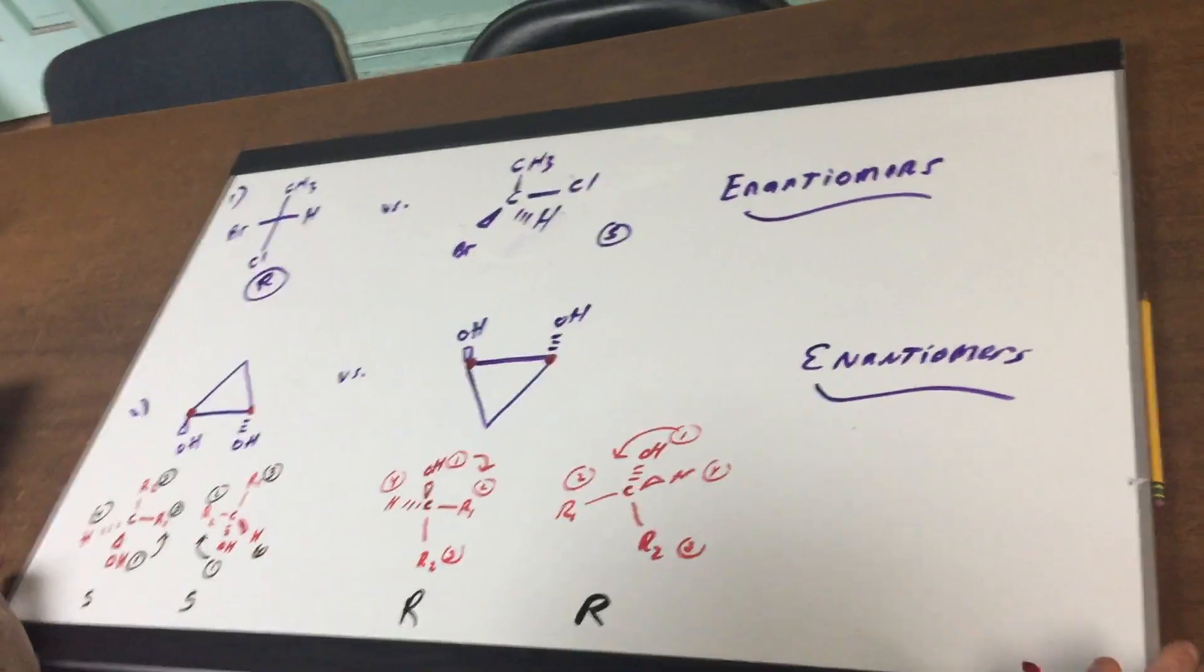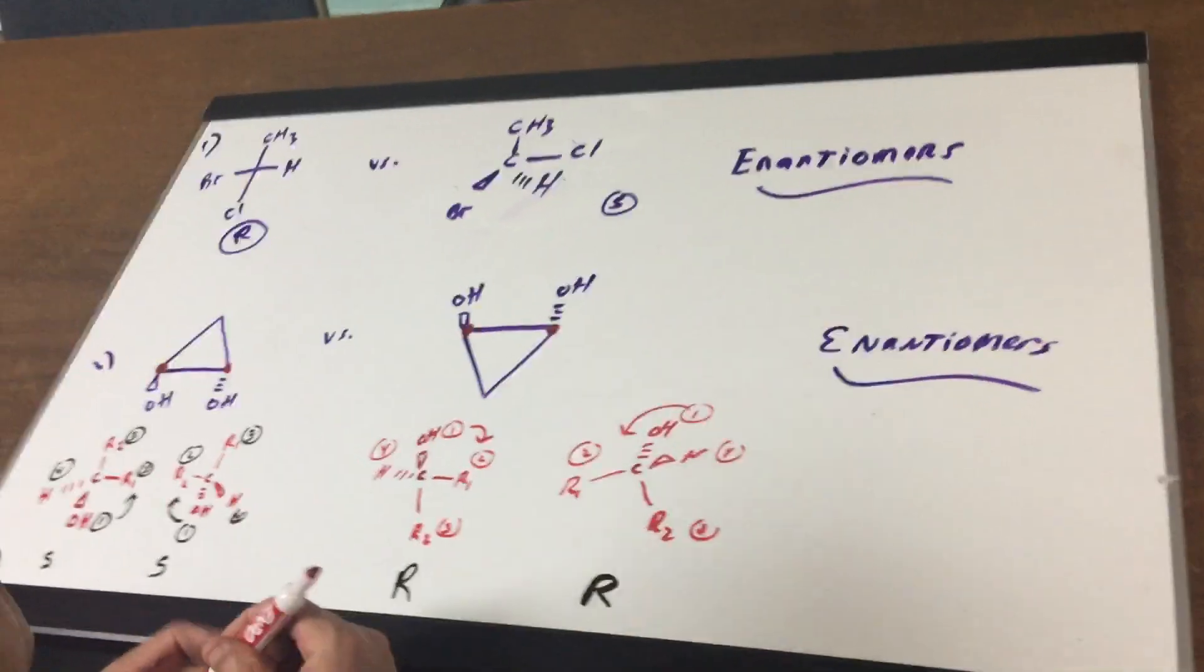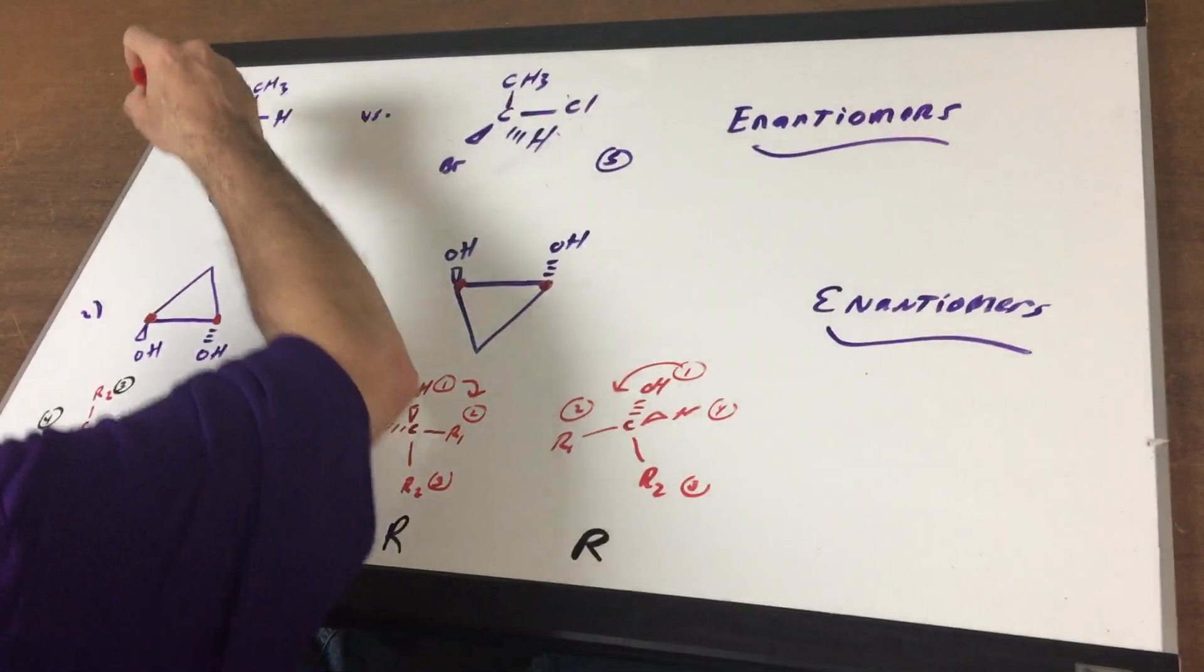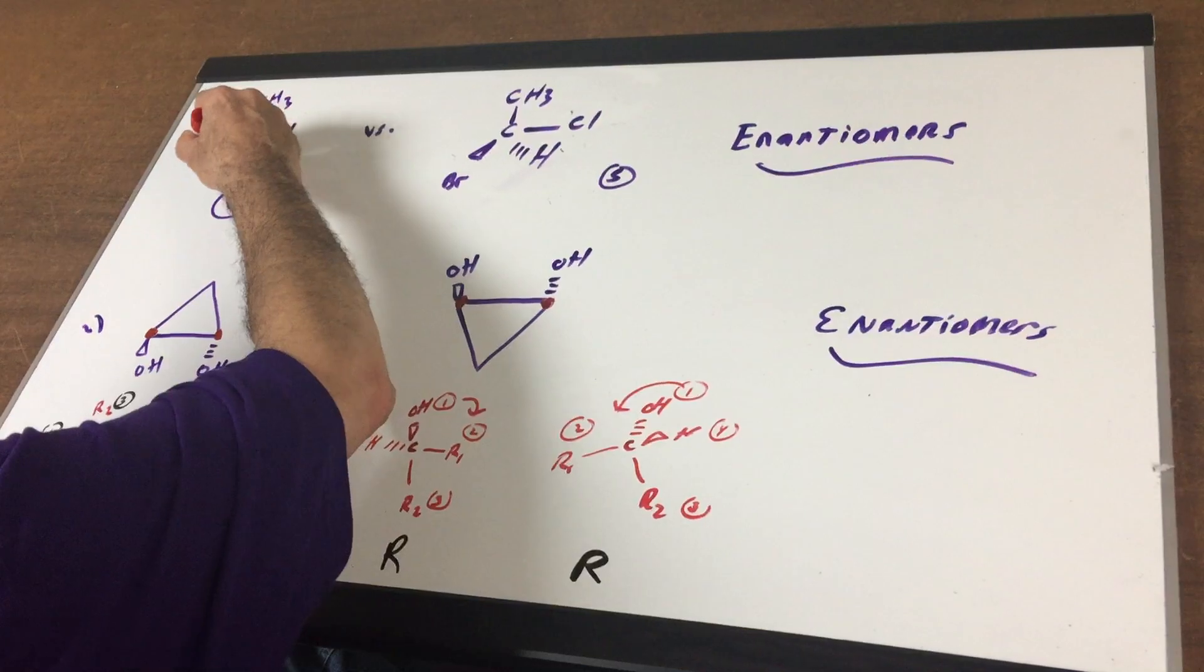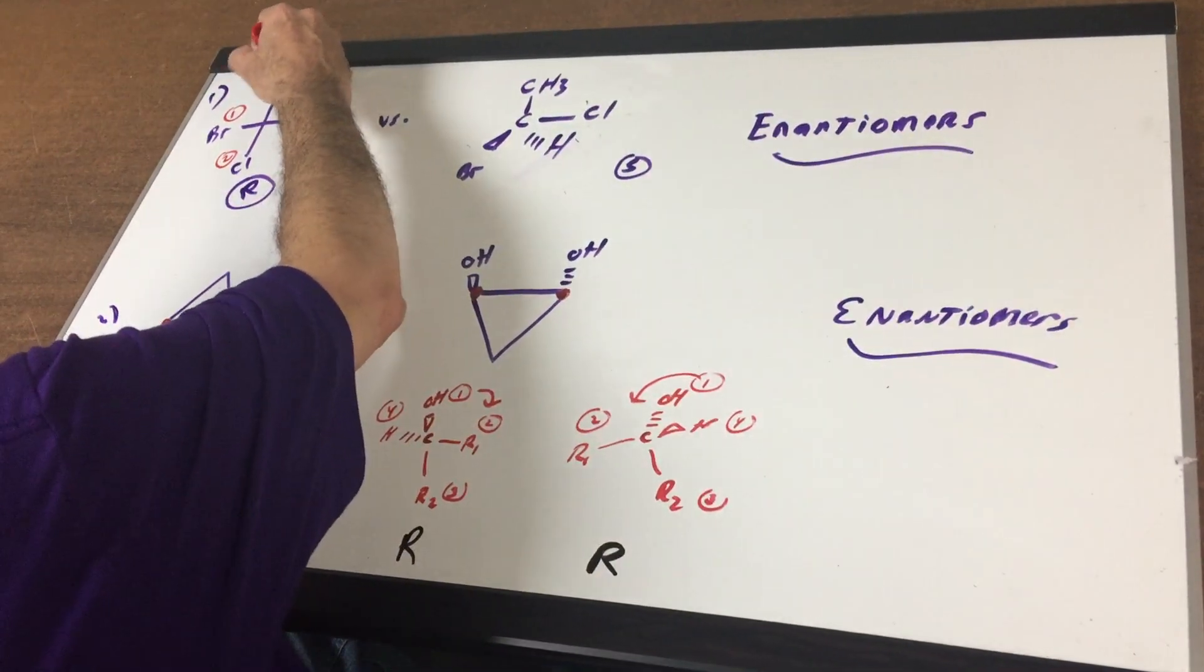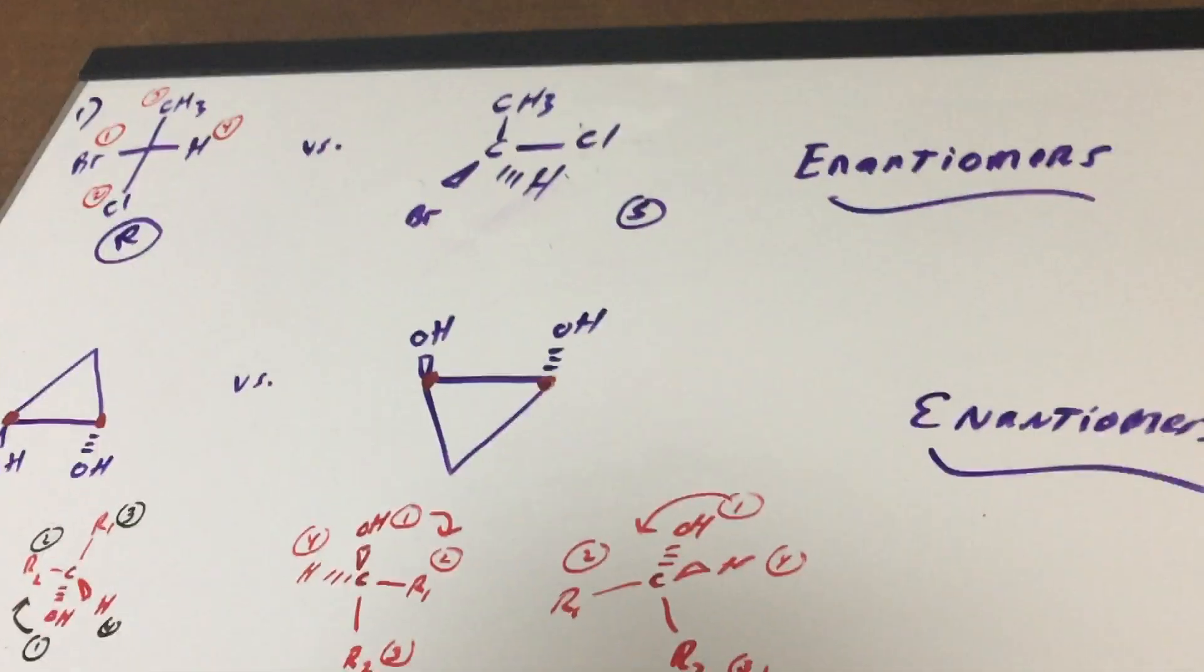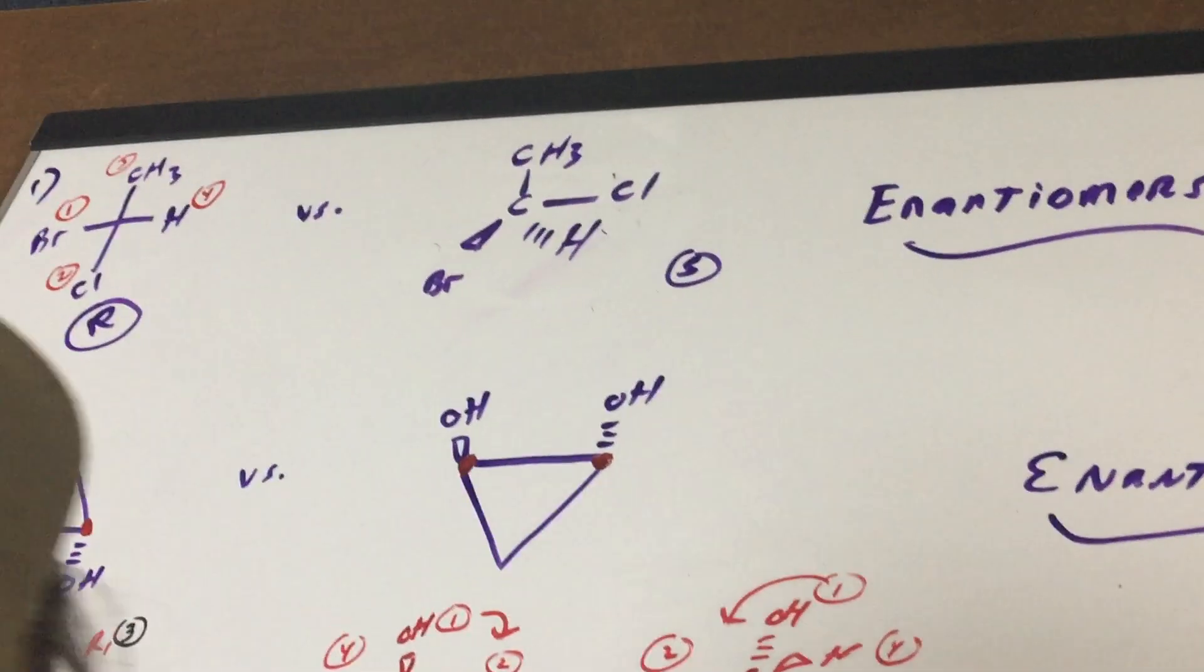In problem number one, I want to compare two things. One is in the Fischer notation and the other is in 3D. The first thing we do is label the group priorities based on atomic number. Bromine has an atomic number of 35, so that's priority number one. Chlorine is atomic number 17, carbon is a 6, and hydrogen is a 1. So we label the priorities. Now if you go clockwise, it's an R from one to two. If you connect one to two and you go counterclockwise, it's an S.